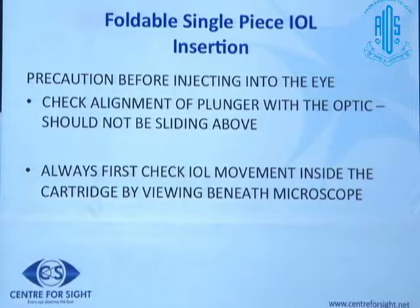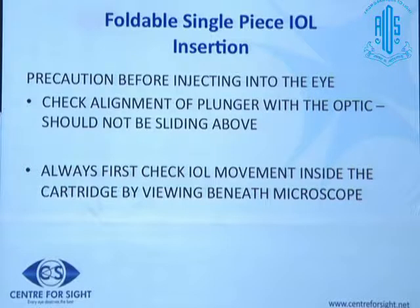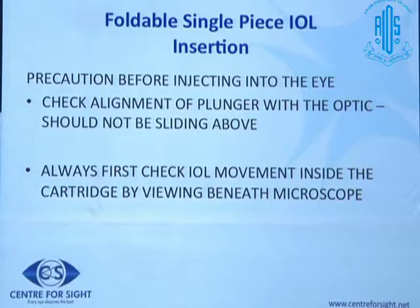Before injecting, check the alignment of the plunger with the optic. The plunger should be hitting squarely on the body of the optic and should not ride above or below it — otherwise you will get a capture and could break the intraocular lens. Always verify under the microscope that as you advance the screw, the lens is actually moving before entering the eye.